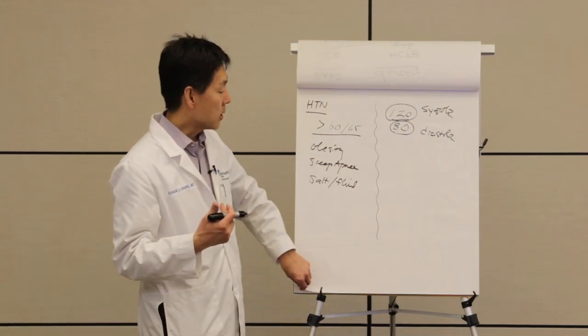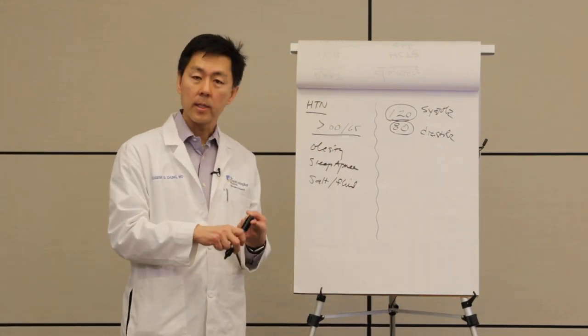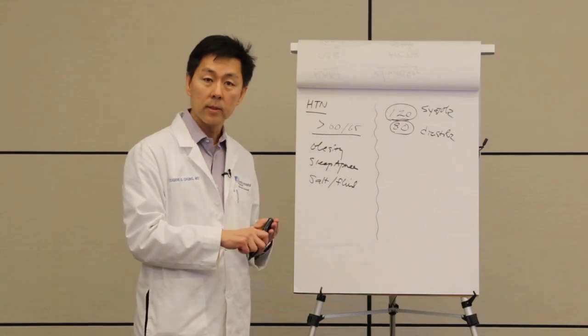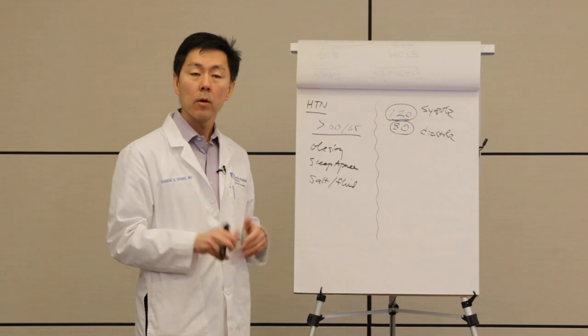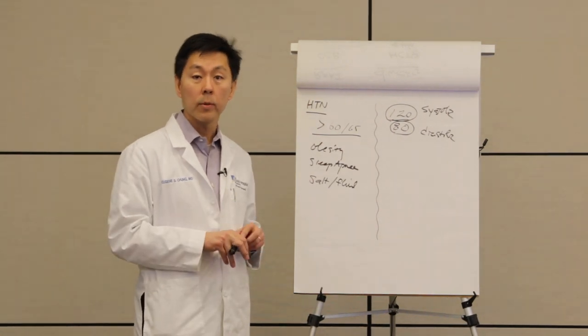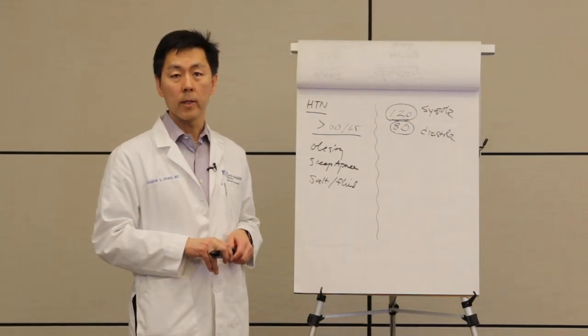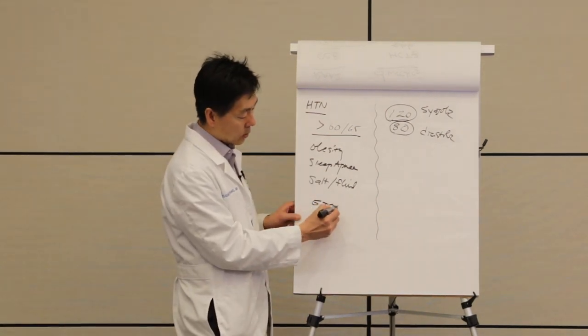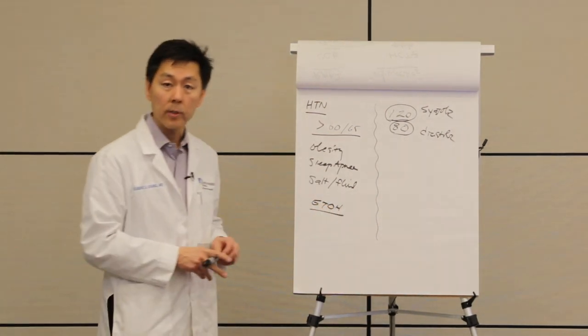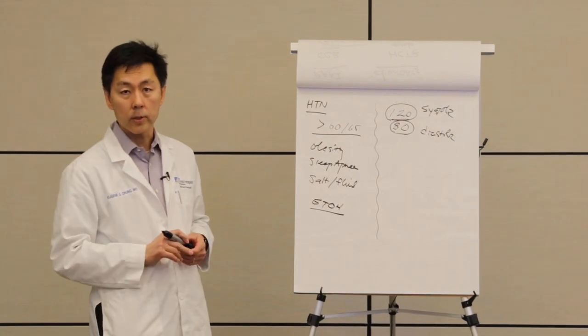First thing we do is adjust lifestyle. So exercise, weight loss, low sodium intake. If you have sleep apnea, try to get that treated. All those things are very important and probably the most important thing you can do for blood pressure. Alcohol intake, another major contributor to high blood pressure.